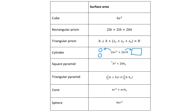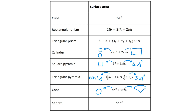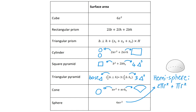For the square pyramid, the b² calculates the area of the square base and the rest of the formula represents the four triangles. Similarly, in the triangular pyramid, the first part of the formula represents the base triangle and the second part is for the three side triangles. For the cone, the first part is the base circle and the second part is for the curved part folding around that circle. For the sphere, you always use the complete formula unless asked for a hemisphere, where you take half of 4πr² and add πr² for the base if it is closed.